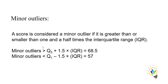A score is considered a minor outlier if it is greater than or smaller than 1.5 times the interquartile range. The upper minor outlier threshold is Q3 plus 1.5 times IQR, which in our calculation equals 68.5. The lower minor outlier threshold is Q1 minus 1.5 times IQR, which comes to 57.